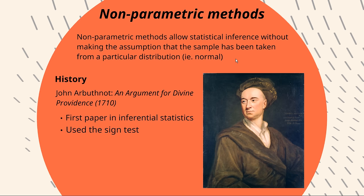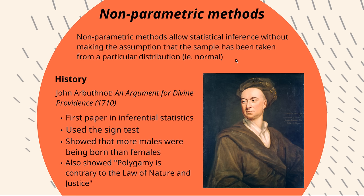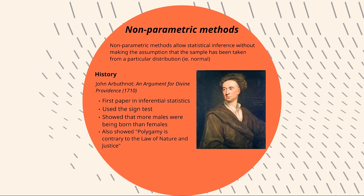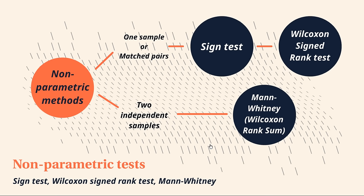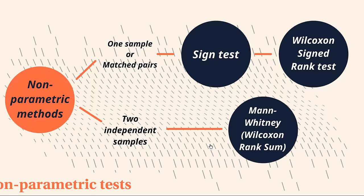In doing so, he showed that more males were being born than females. That was the sort of prime conclusion for this paper. And interestingly, a secondary conclusion was that polygamy is contrary to the law of nature and justice, which may have been a little less data-driven than perhaps the first conclusion. It's a sign of the times of the paper, I would suggest. But this guy, John Arbuthnot, is quite interesting. Apparently, he's quite a polymath. He was well known for his poetry and other stuff as well. Seemingly an interesting dude. Anyway, let's get on to having a look at some of these actual examples of these non-parametric tests, the first of which is the sign test itself.